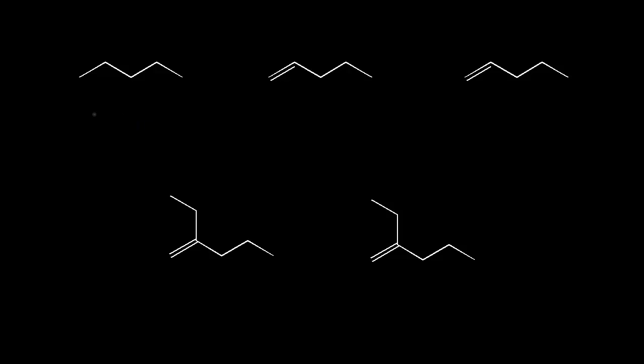We've already seen how to name alkanes. For example, this alkane has five carbons — one, two, three, four, five — and we know it's called pentane.